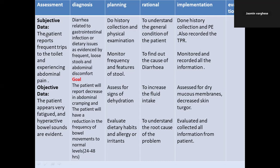The diagnosis depends upon the condition of your patient. For example: diarrhea related to gastrointestinal or GI infections or dietary issues as evidenced by frequent loose stools and abdominal discomfort. The goal is: the patient will report a decrease in abdominal cramping, and the patient will have a reduction in the frequency of bowel movements to normal levels within 24 to 48 hours. It is very important to specify the time, as delay can lead to severe complications.